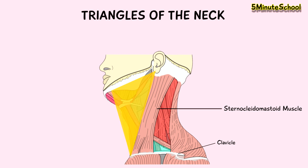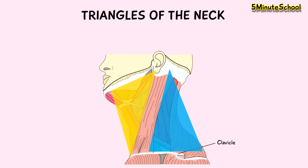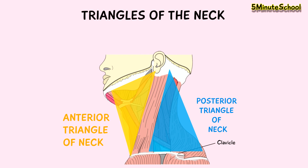Now that I've pointed this out, you may already be able to distinguish two triangles — one here and the other here. We can name them the anterior triangle and the posterior triangle. So the sternocleidomastoid muscle divides the neck into two triangles: the anterior and posterior triangles of the neck.